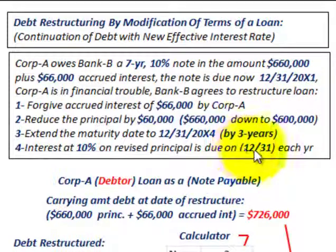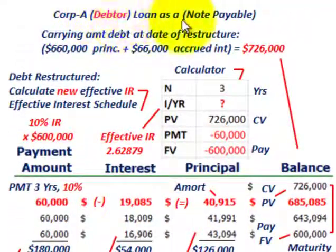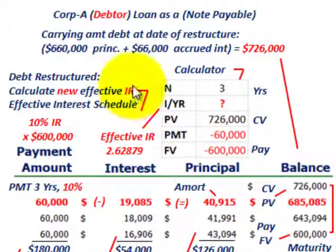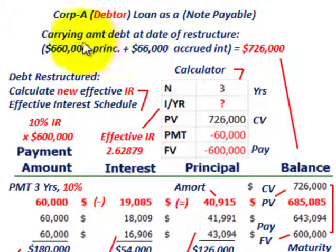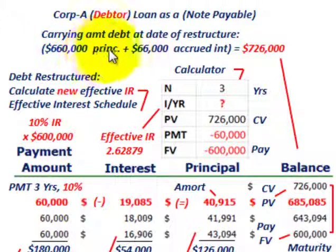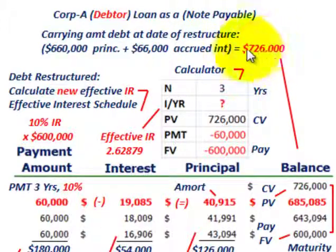The interest is going to be due at 12-31 at the end of each year. Let's first look at Corp A, the debtor on this loan or notes payable. This is where we're going to come up with the new effective interest rate that has to be calculated, based on Corp A the debtor. We start with the carrying amount of debt at the date of restructure: $660,000 worth of principal plus $66,000 of accrued interest, giving us $726,000.